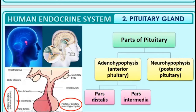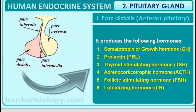The pituitary gland secretes the following hormones: somatotropin or growth hormone, which increases growth; prolactin, which stimulates milk secretion; thyroid stimulating hormone, which stimulates the thyroid gland; adrenocorticotrophic hormone, which stimulates the adrenal glands; follicle stimulating hormone, which stimulates ovaries and testes to do gametogenesis; and luteinizing hormone, which stimulates ovaries and testes to release sex hormones.